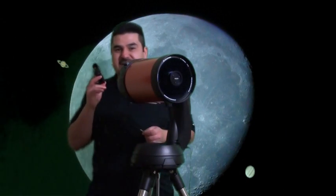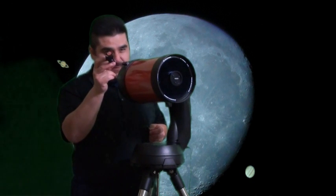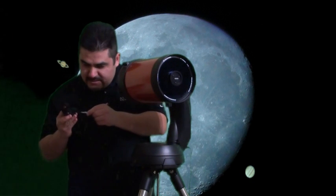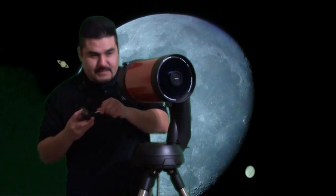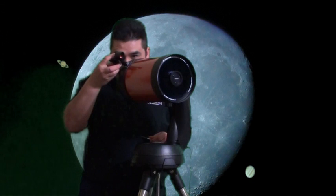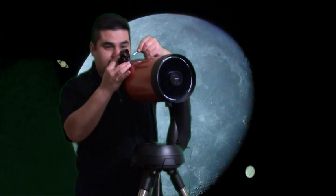The next thing we're going to set up here is our scope right here. It's got a couple of screws. Just let them loose a little bit. Put them, slide them into the telescope here, and then you tie them up.